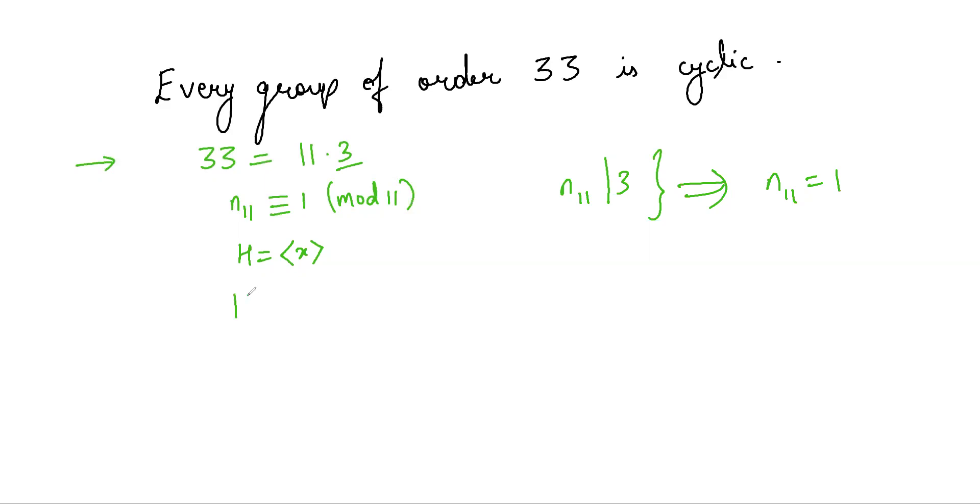So let K be a group of order 3. We have order of H equals 11 and order of K equals 3.